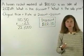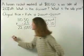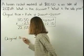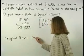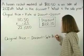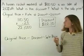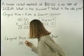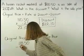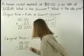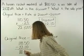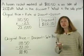Next, let's find the sale price. The formula for sale price is the original price minus the discount. So here, the original price is $110.50 and the discount is $22.10. So subtracting $110.50 minus $22.10, we get $88.40. So the sale price is $88.40.